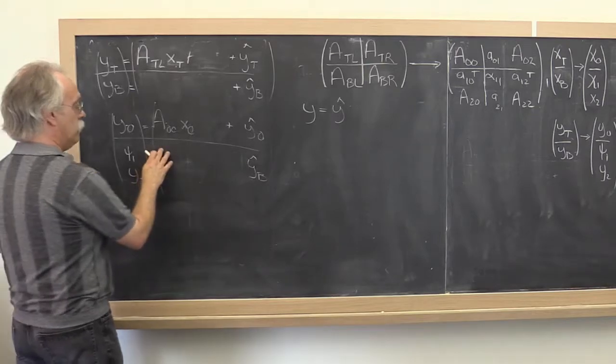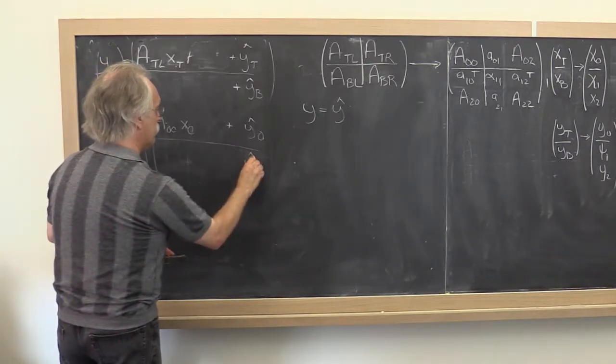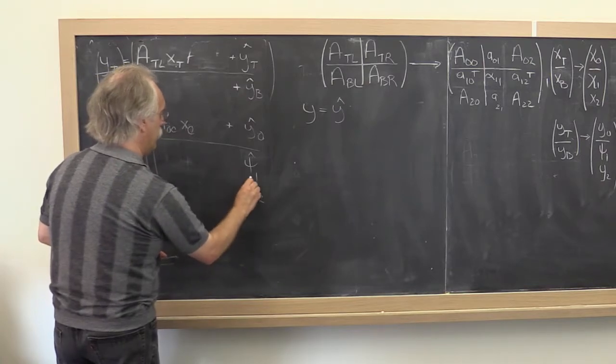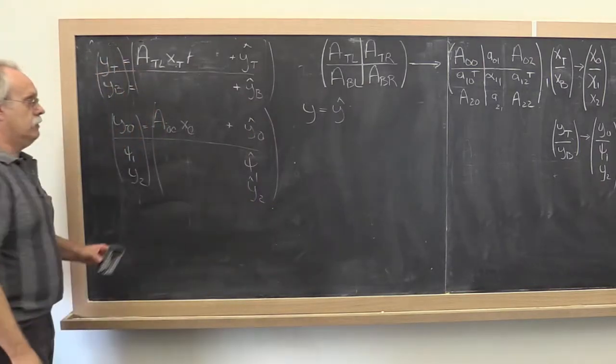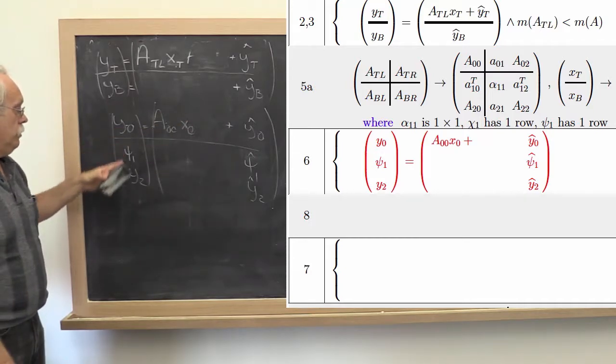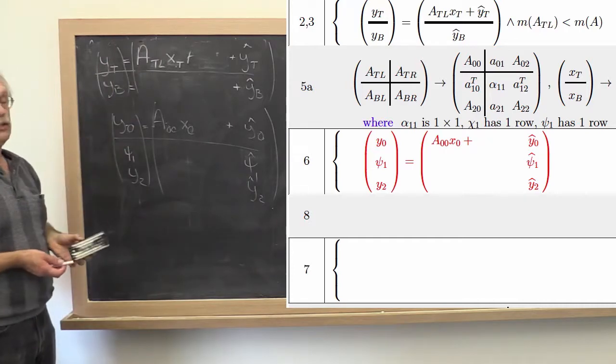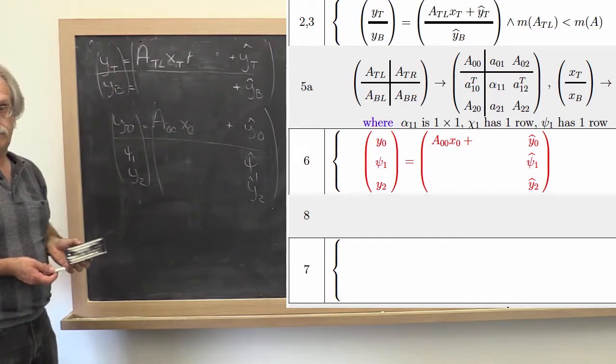And that has to be equal to, and then this becomes x zero, y two. That's the state of the vector in terms of the exposed pieces. And we get that by doing the textual substitution.